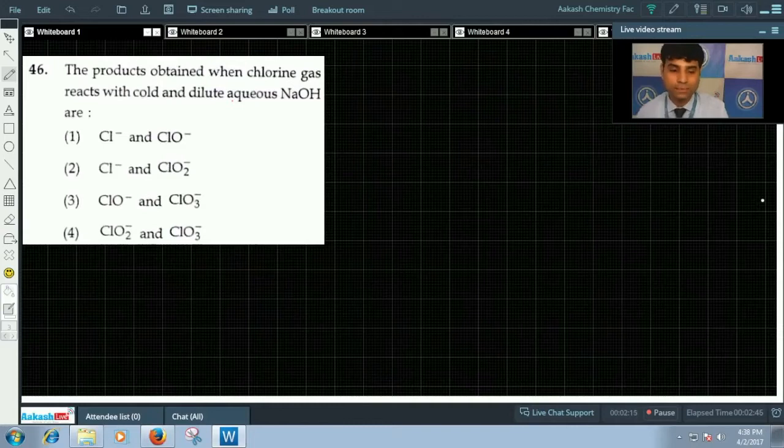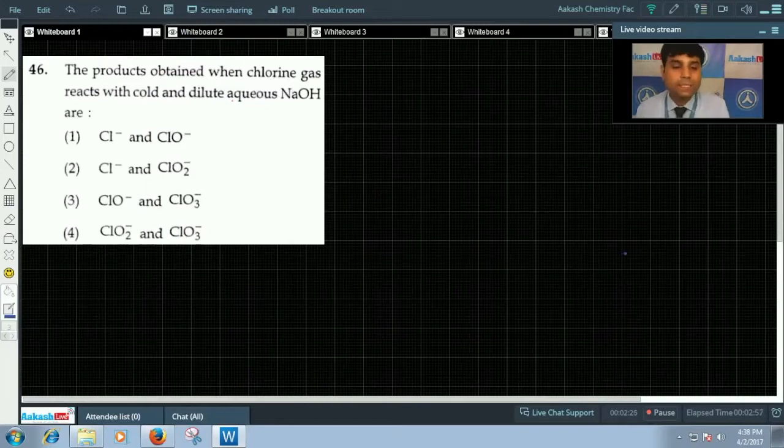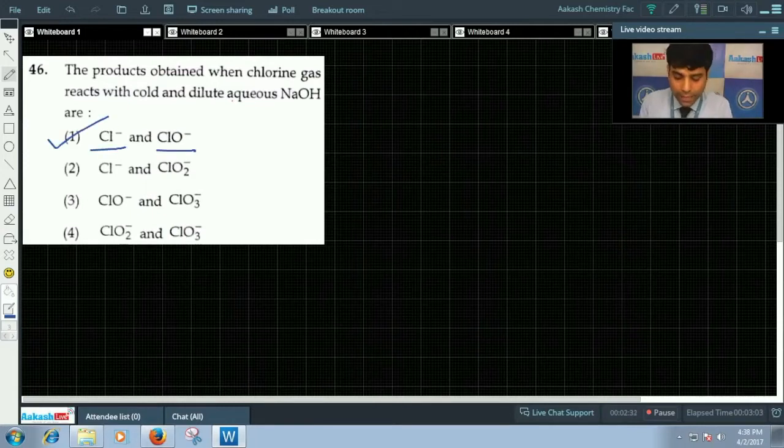Third option is ClO⁻ and ClO3⁻, and fourth option is ClO2⁻ and ClO3⁻. So when chlorine gas reacts with cold and dilute sodium hydroxide, it gives you chloride and ClO⁻.